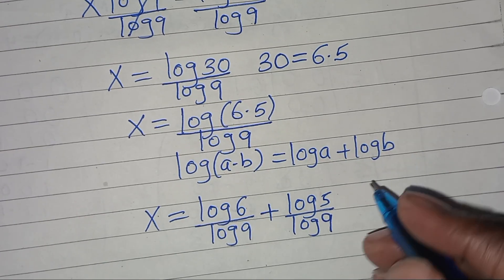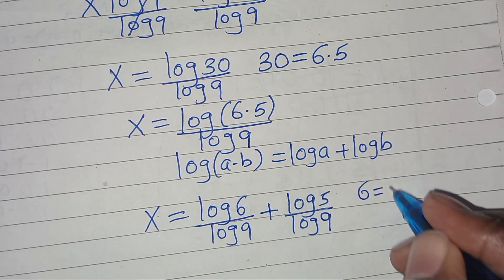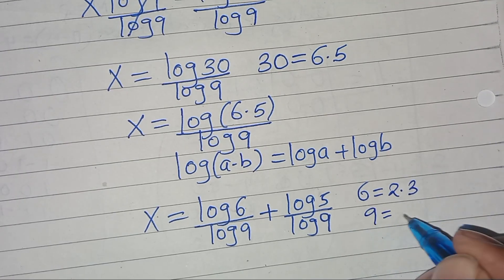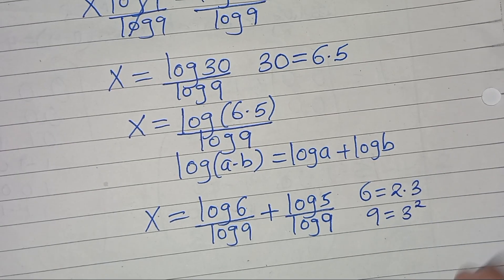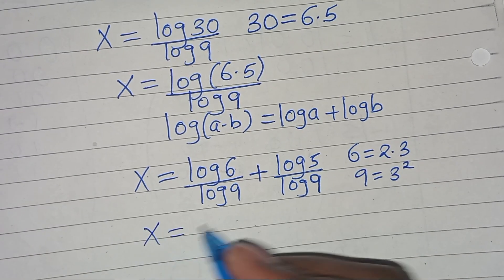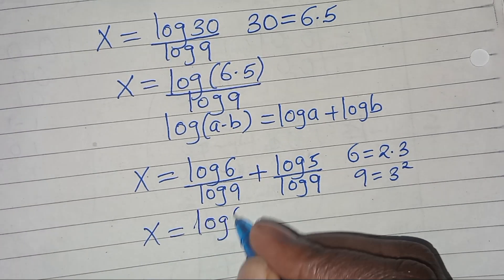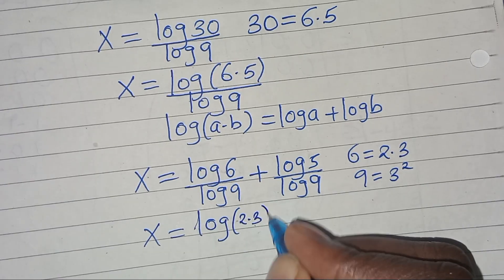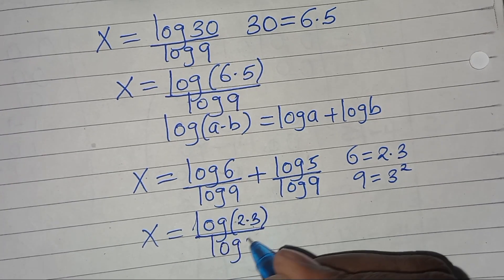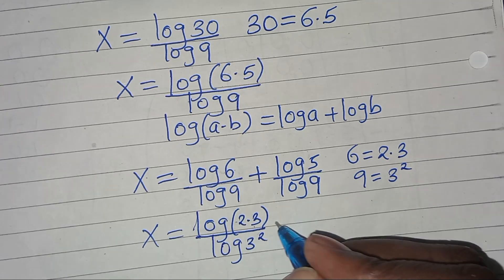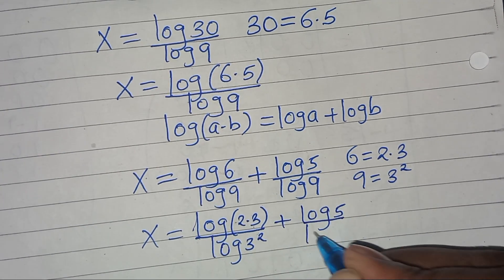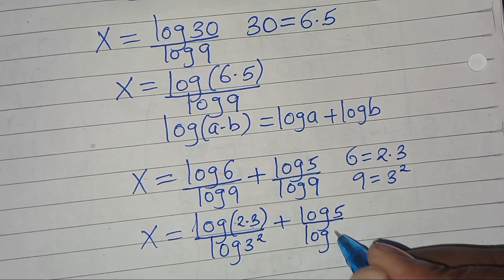The next step is that we can express 6 as 2 times 3, and we can express 9 as 3 to power 2. So this means we have log(2 times 3) divided by log(3 to power 2), plus log 5 divided by log(3 to power 2).